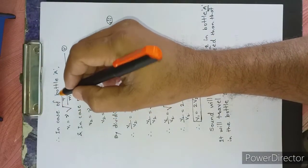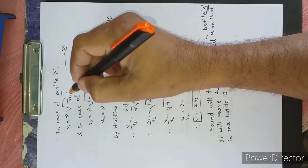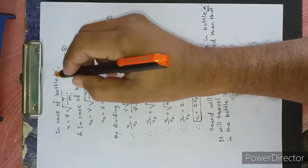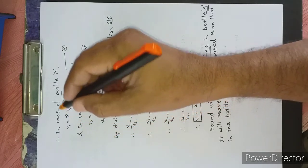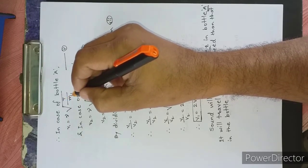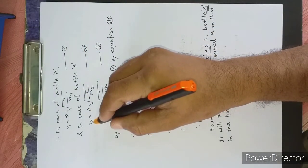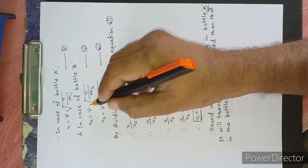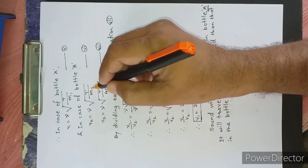Now we will consider only the temperature and mass of the gas filled in the bottles. Therefore, in case of bottle A, V1 will depend on the factor: gamma times the square root of temperature divided by mass of the gas, that is M1. This will be equation number 5. In case of bottle B, velocity V2 is equal to gamma times the square root of temperature divided by M2.